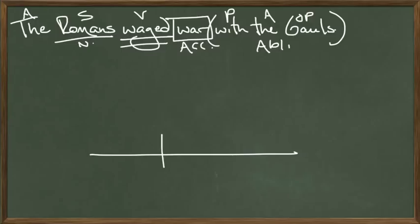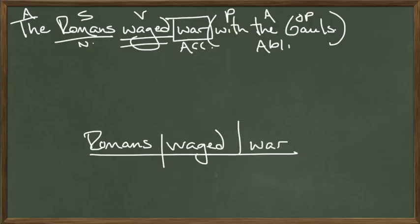We always start with a straight line which we divide. We have the subject on the subject side, so 'Romans.' What are they doing? They waged. What did they wage? They waged war. Since 'war' is a direct object, it's in the accusative case — it goes on the main line after this half-stick here. They waged war with — what kind of war? It was a war with Gauls.